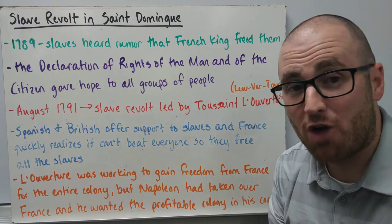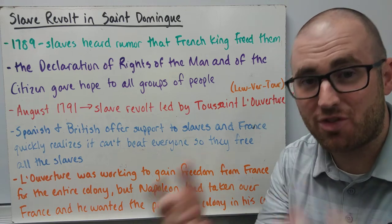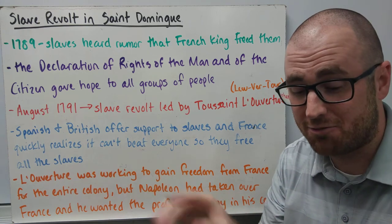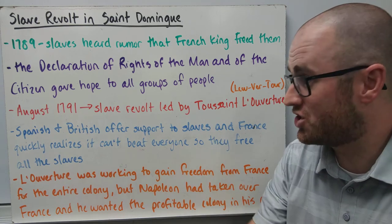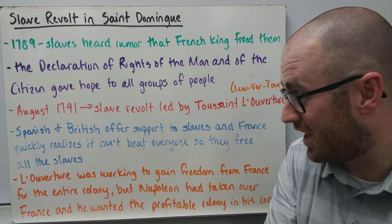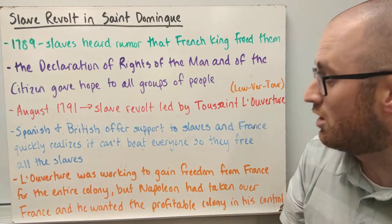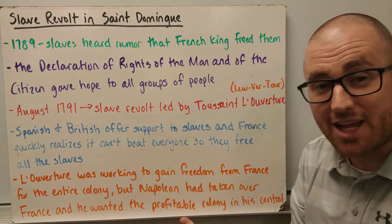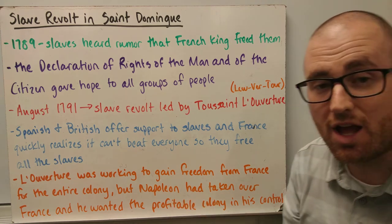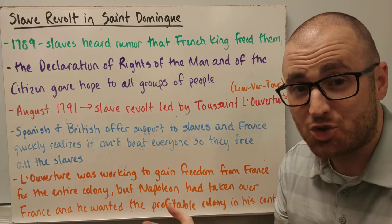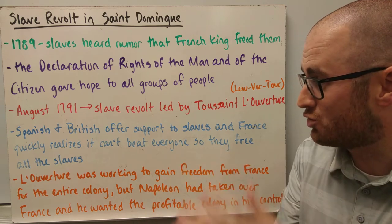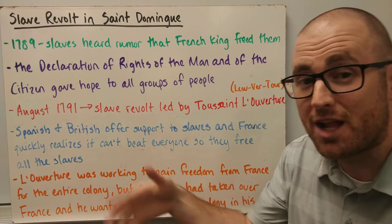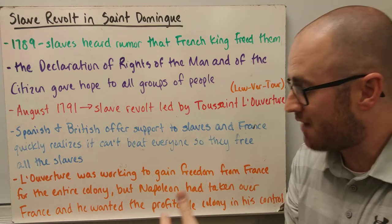Spain and Britain offered their support to the slave revolt because France was pretty much fighting everybody at that time. France quickly realized they weren't going to be able to defeat the slave revolt along with the British and the Spanish, so they just freed all the slaves. Louverture was then working to gain freedom for the entire country, but Napoleon eventually took back over in France and wanted San Domingo to be more profitable again, so he started sending French soldiers back over.